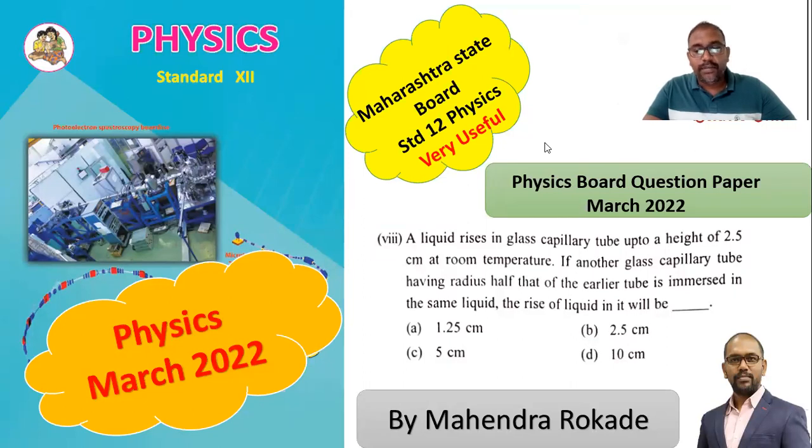Now MCQ 8 from March 2022 examination. A liquid rises in a glass capillary tube up to a height of 2.5 cm at room temperature. If another glass capillary tube having radius half that of the earlier tube is immersed in the same liquid, the rise of liquid in it will be.